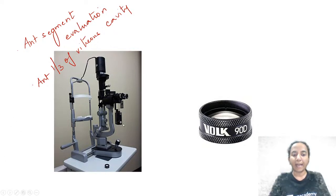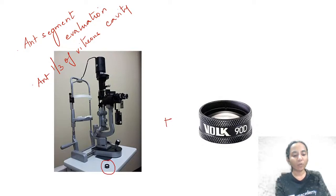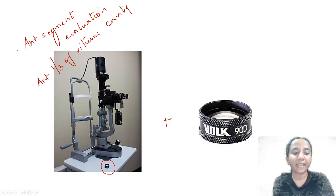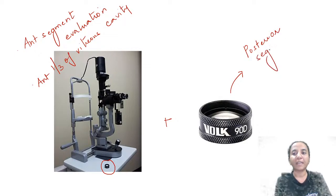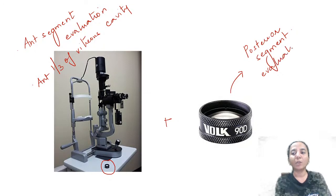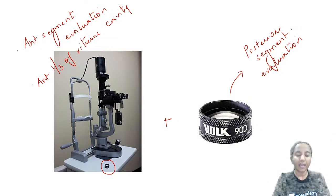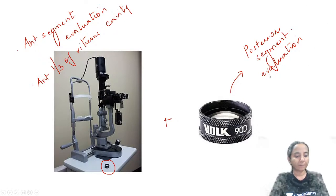With the slit lamp, if you use an additional 90D lens, you can also evaluate the posterior segment. So the slit lamp can be used for both anterior and posterior segment evaluation. Without the additional lens, you see the anterior segment and up to the anterior one-third of the vitreous; with the 90D lens, you can also see the fundus.